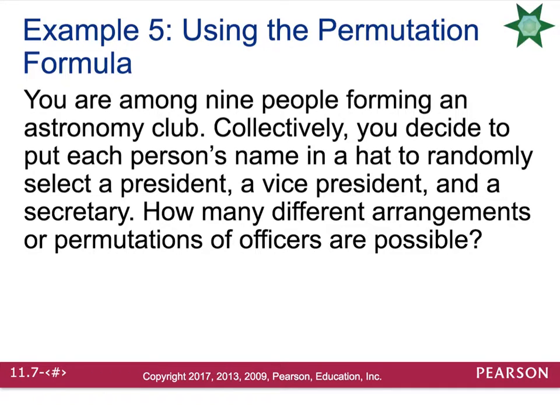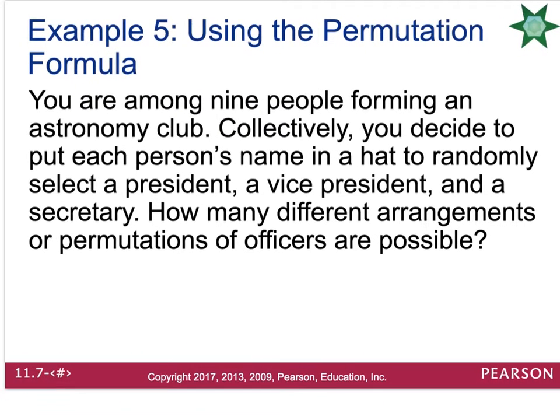You are among nine people forming an astronomy club. Collectively, you decide to put each person's name in a hat to randomly select a president, a vice president, and a secretary. How many different arrangements or permutations of officers are possible? So you have nine people.